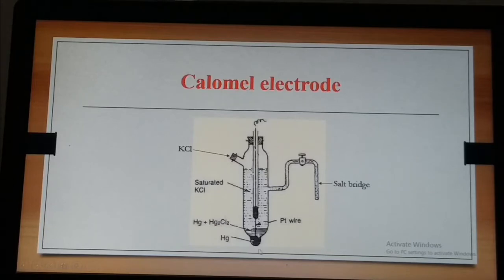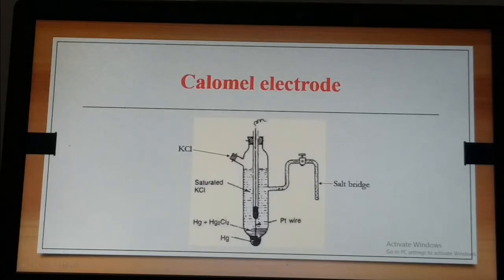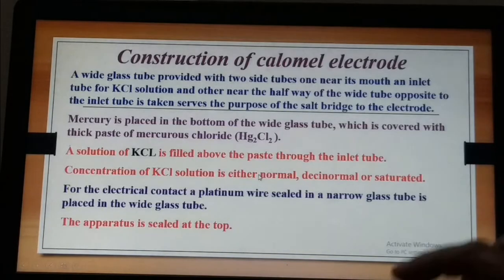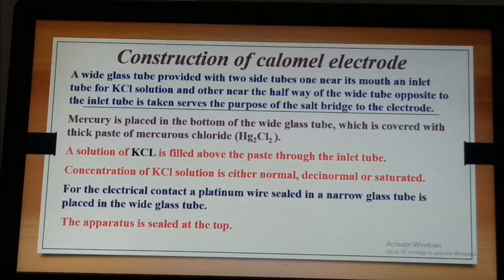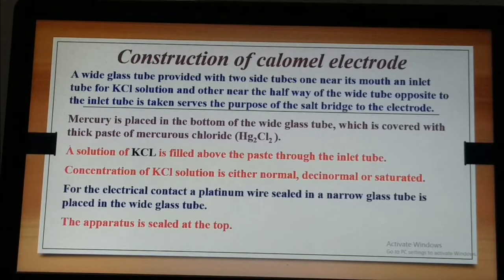Once the mercury and mercurous chloride paste is filled in the glass tube, the KCl solution is introduced and the platinum wire is inserted so that it reaches the mercury, then sealed at the top. The concentration of KCl used could be normal, decinormal, or saturated.